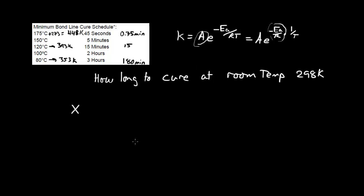Let me just start, that way maybe we'll become clear. So let's say in the 175 degree C case we want to drive the reaction to completion. X is going to be equal to 0.75 minutes times K at 448 Kelvin.